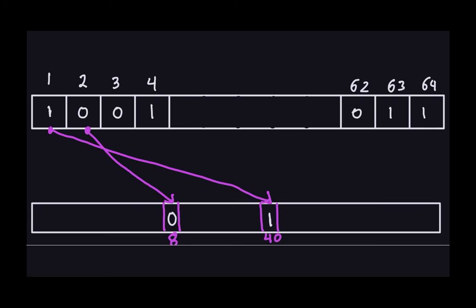Similarly, to find where position 3 goes, you go back to the table and look for 3 to see what position it maps to. That's how you populate the whole transformed block: once you know your 64-bit block, applying the permutation is just rearranging the bits according to the table.